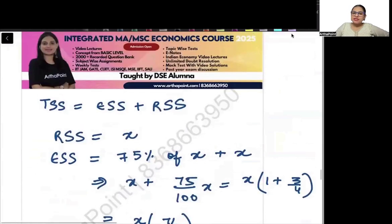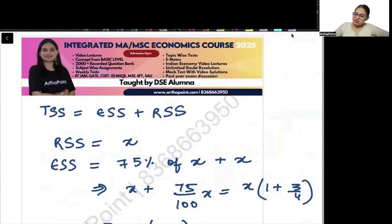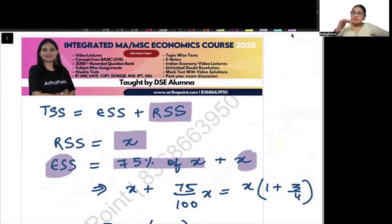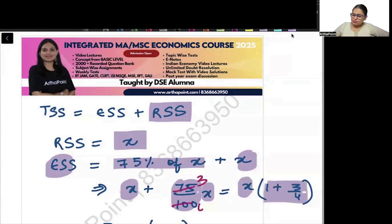Let us take RSS to be X. If RSS is X then ESS is X plus 75% of X. It is 75% more than RSS. So it will be X plus 75% of X. I have just taken one X common and we get 3 by 4.